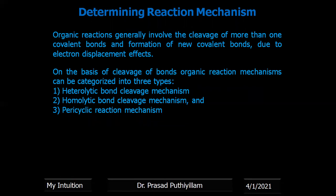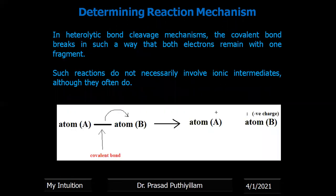On the basis of this cleavage of bonds, organic reactions can be categorized as heterolytic bond cleavage mechanism, homolytic bond cleavage, or even pericyclic reaction mechanisms. In heterolytic bond cleavage, the covalent bond breaks such that atom A is connected to atom B, and if cleavage is heterolytic, the electrons move completely towards B, since it may be more electronegative. The obtained intermediate has atom B with two electrons and a negative charge, while atom A gets a positive charge.